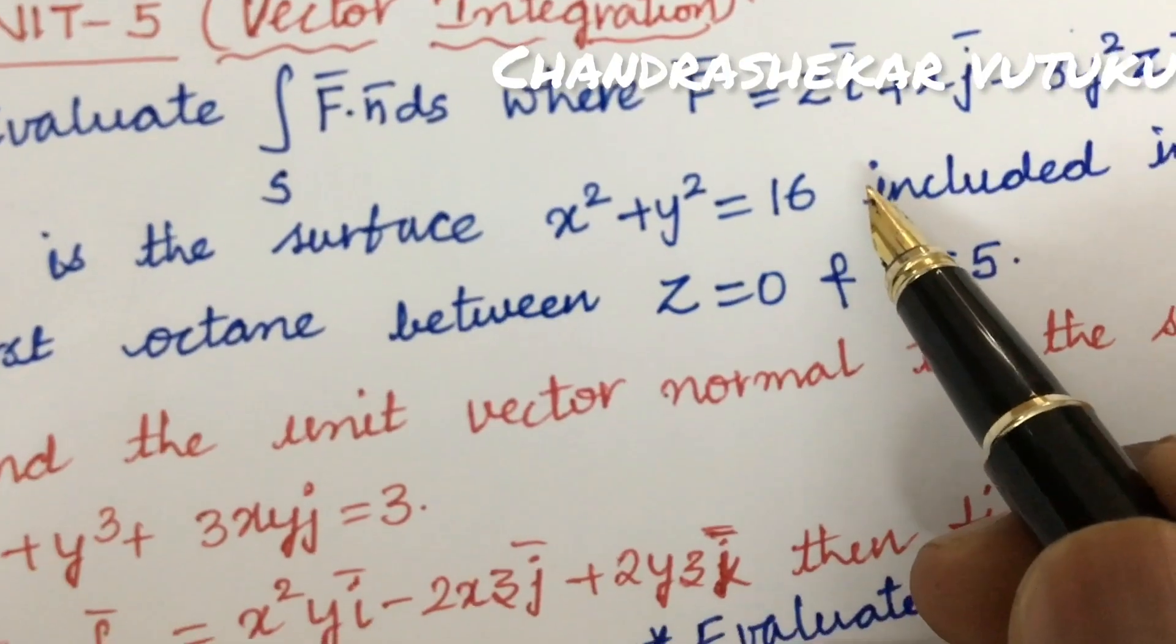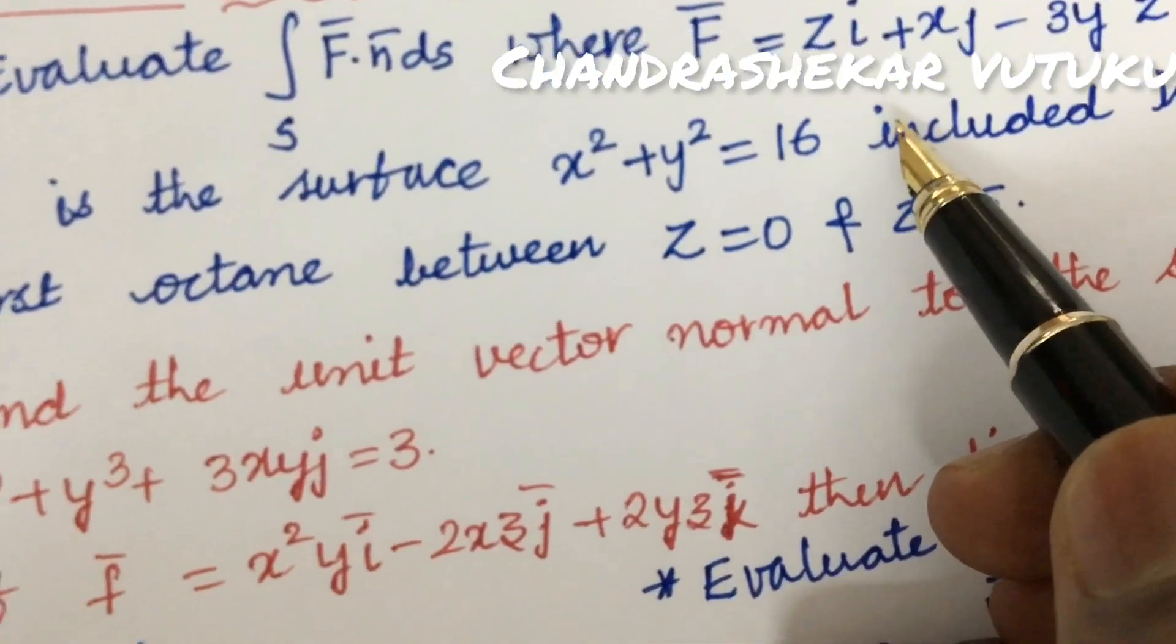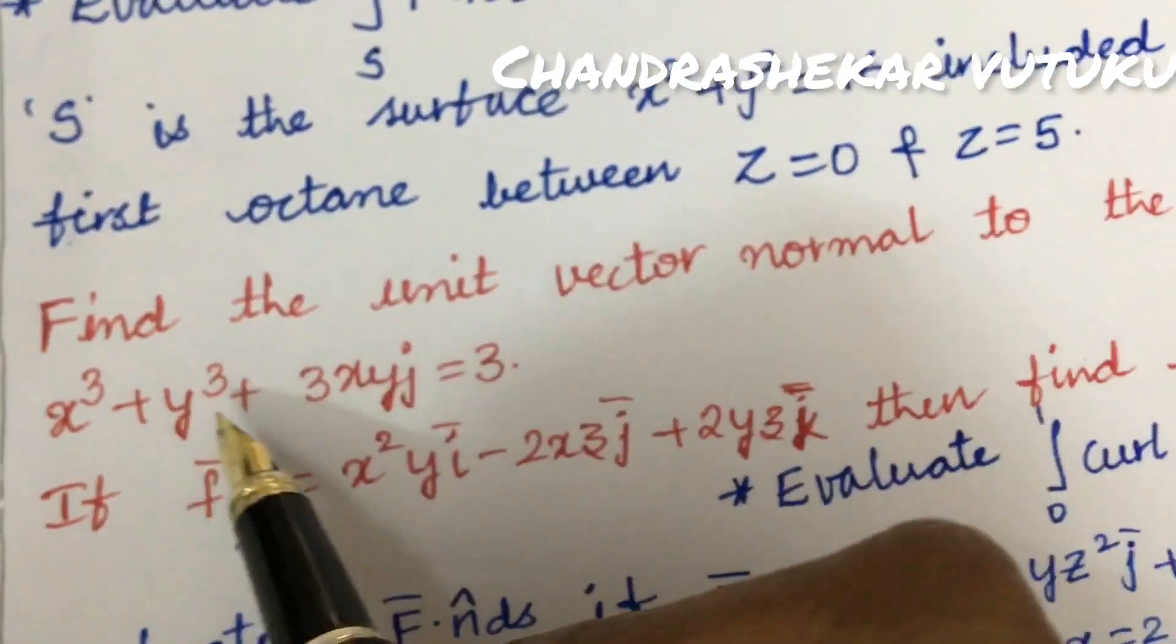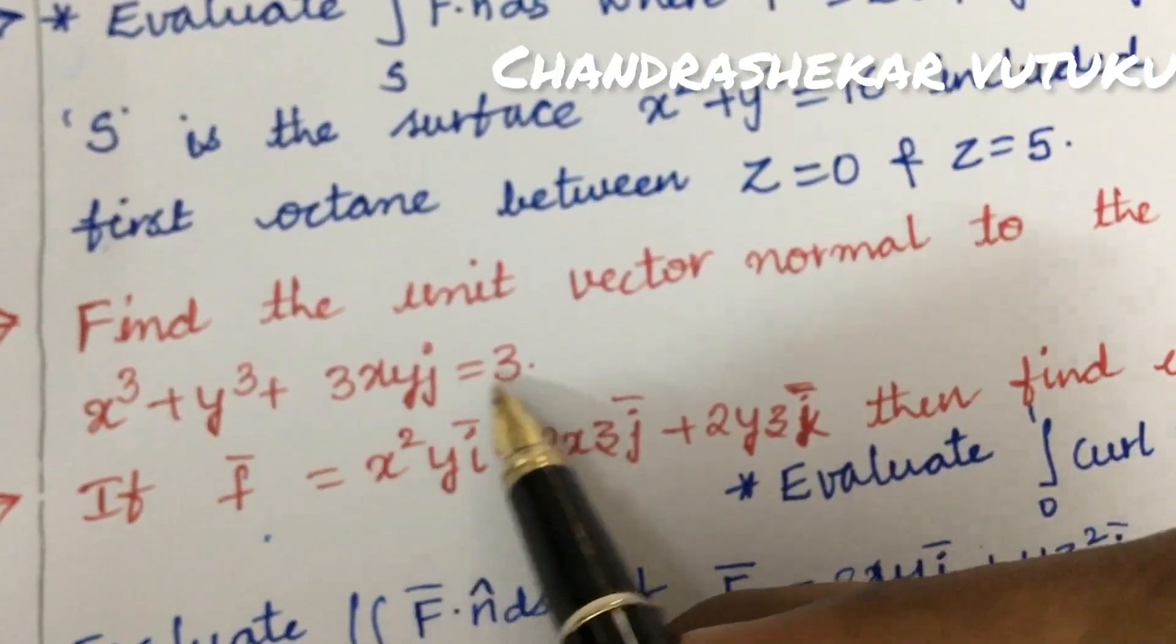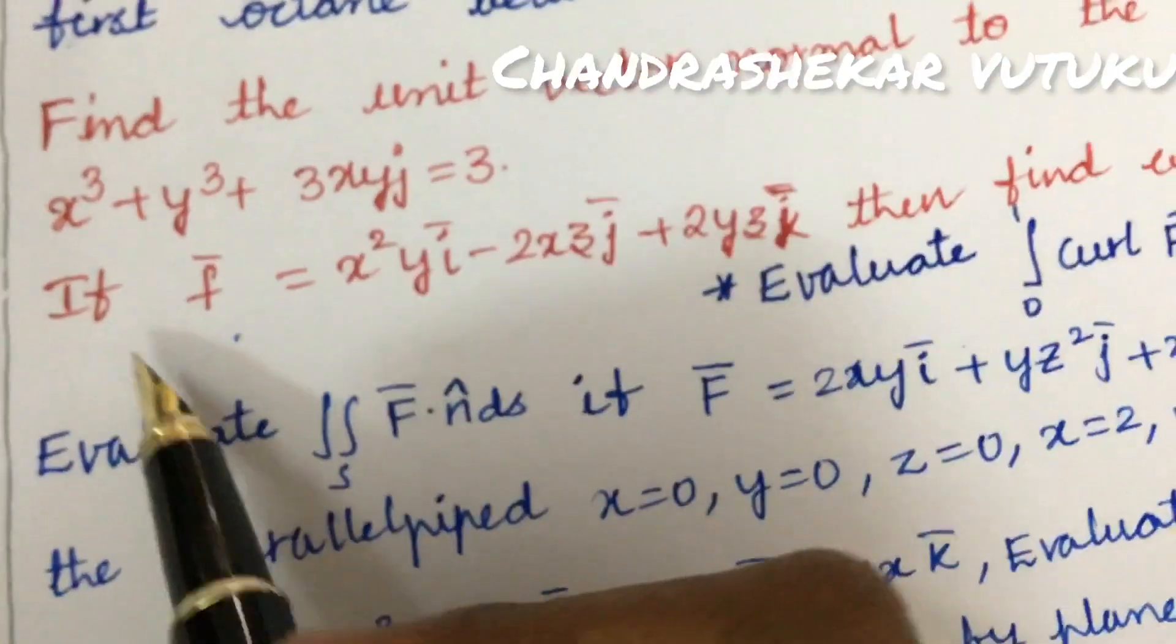Find the unit vector normal to the surface x³ + y³ + 3xyj = 3. If this is an equation, then find curl f.